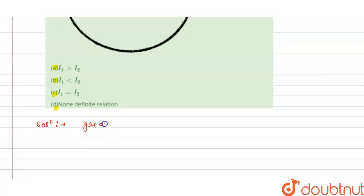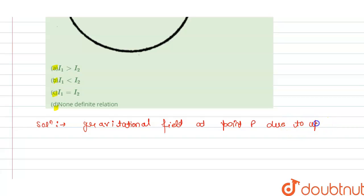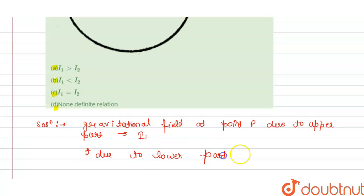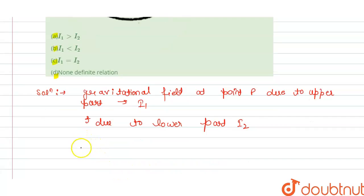The solution: the gravitational field at point P due to the upper part is i1, and due to the lower part is i2. We know that if we cut the spherical shell, i1 is the gravitational field due to the upper part and i2 is due to the lower part.